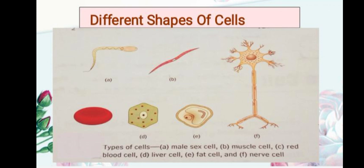Nerve cells are long to conduct impulses from distant parts of the body to the brain and vice versa. Muscle cells are long and contractile to pull or squeeze body parts. Even cells in the plant body vary in shape — for example, guard cells of the stomatal pore in the leaves are bean-shaped to open and close the pore.